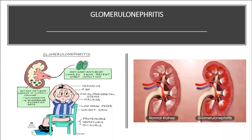Glomerulonephritis is inflammation of the glomeruli — tiny blood vessel structures in the kidneys. Acute glomerulonephritis is most commonly caused by streptococcal infection elsewhere in the body, such as an upper respiratory or skin infection. It can also be caused by autoimmune disease, such as systemic lupus erythematosus (SLE), which can affect the joints, skin, kidneys, blood cells, brain, heart, and lungs.